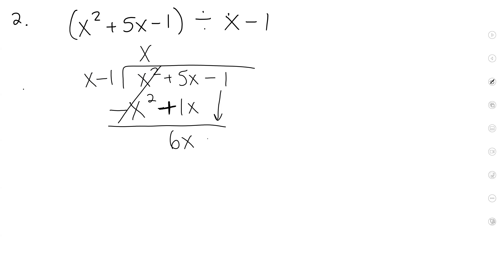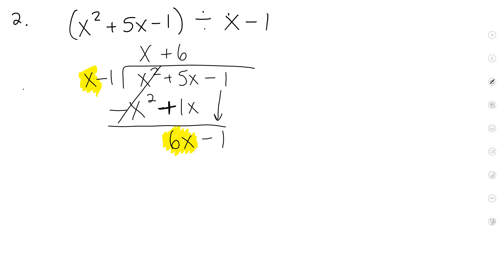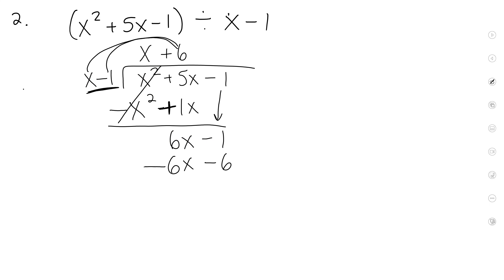x squared minus x squared is just 0. So 5x plus 1x is 6x. Bring down the next item. x times what will give you 6x? 6. So everyone go ahead and put a plus 6 on the top. Now we have two items that we're dividing by, so first I'm going to do x times 6, which is 6x, and I'm going to do negative 1 times 6. Now what do we do? Change the sign. So this will be a minus and this will be a plus. 6 minus 6 is 0. Negative 1 plus 6 is 5. So here's your answer: x plus 6 plus your remainder, which is 5 over — you got it.